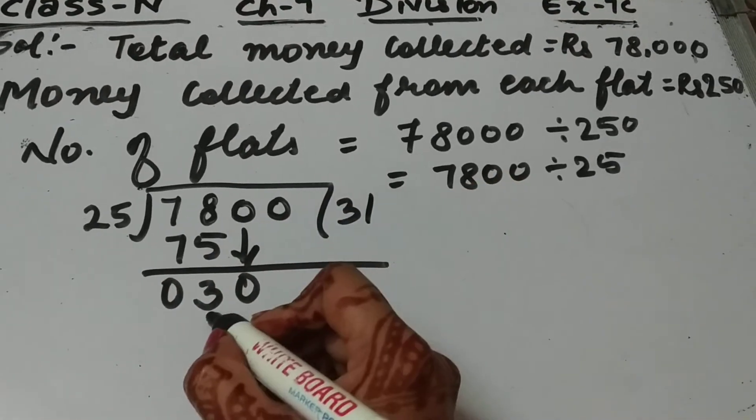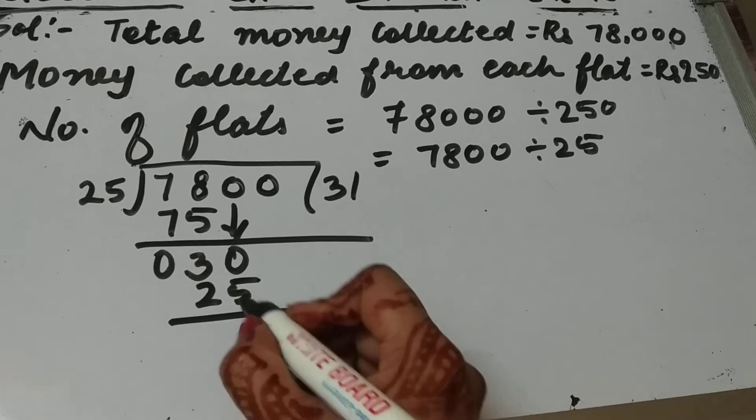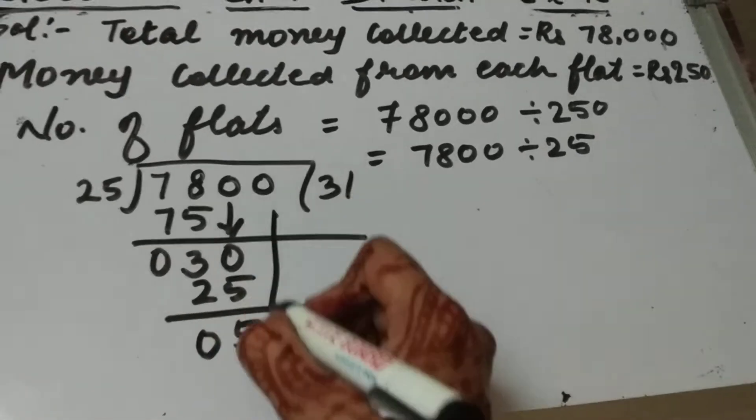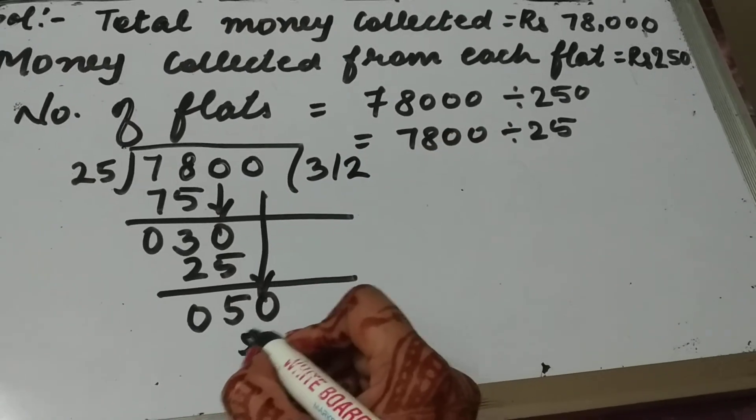25, 1 is a 25. Subtract these two numbers. 10 minus 5 is 5. This will become 0 and bring this 0 down. 25 to the 50.